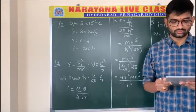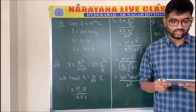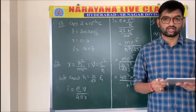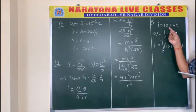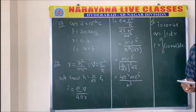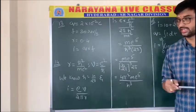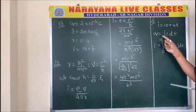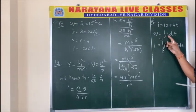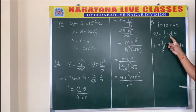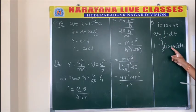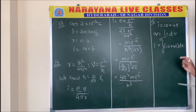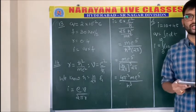Problem number fifteen: an electric current through a wire depends on time as I = 10 + 4t. Find the charge that flows through the wire in 10 seconds. Charge = ∫I dt from 0 to 10 = ∫(10 + 4t) dt, solving this integration gives the required answer.